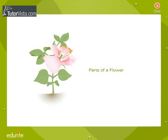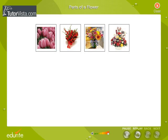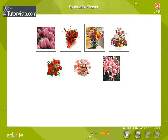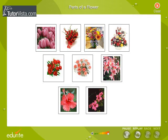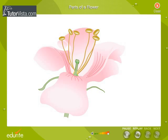Parts of a flower. The flower is a reproductive organ of a plant. Though flowers are of different shapes, sizes, and colors, most flowers have the same basic parts. Let us get familiar with the parts of a flower.